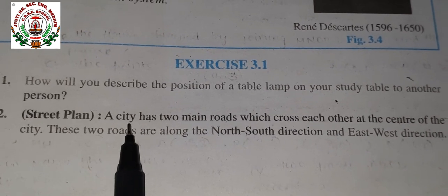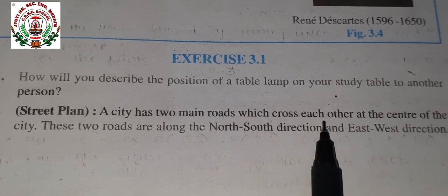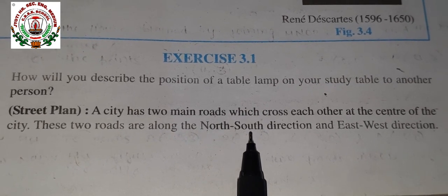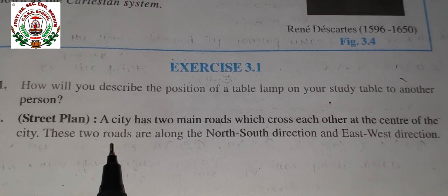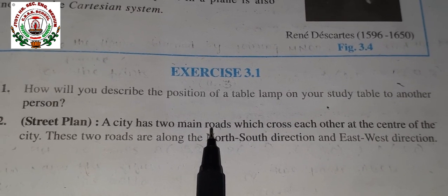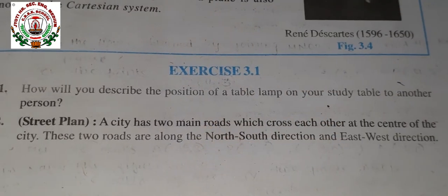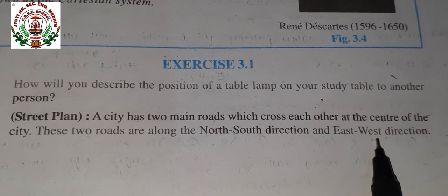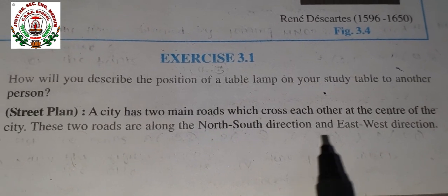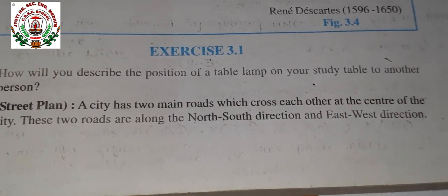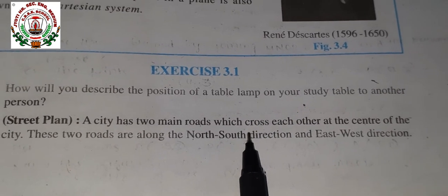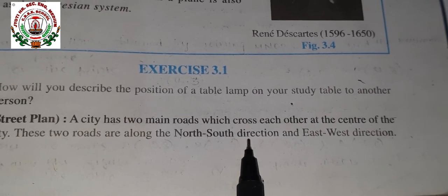Now next question — second question is: a city has two main roads which cross each other at the center of the city. These two roads are along north-south direction and east-west direction. One is north-south, meaning it will be a vertical line — that is y-axis. Another road is in east-west direction — that means x-axis. So plot two roads, that is x-axis and y-axis, and where they meet at the center, that is the origin of the graph. You have to plot this in your graph paper for the second question.